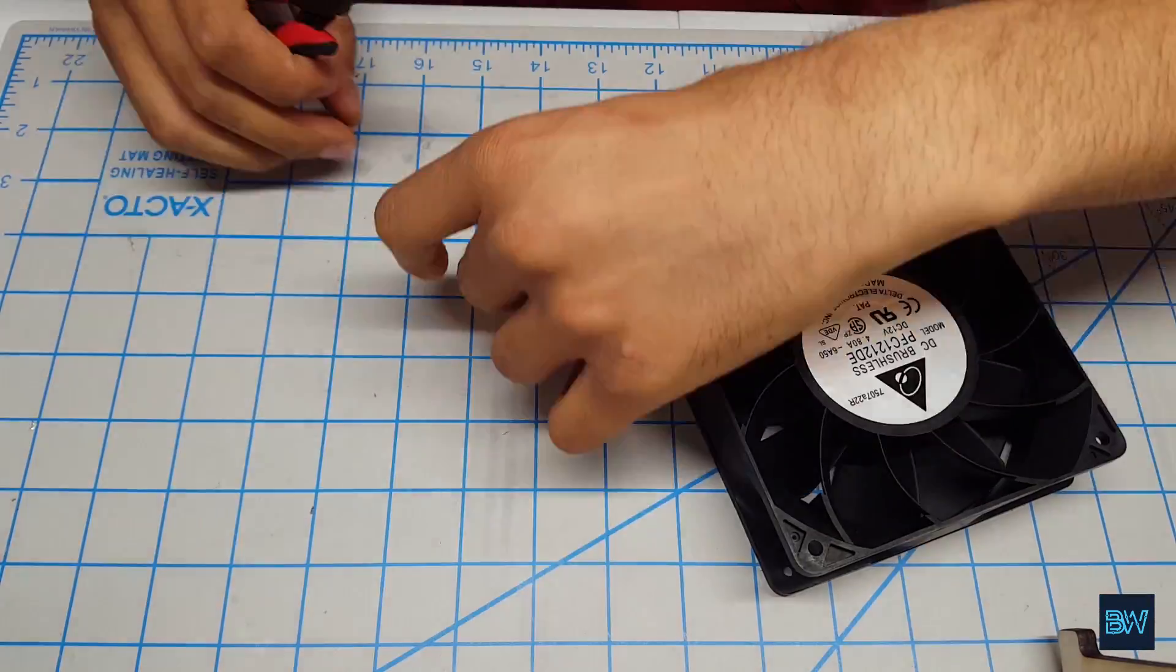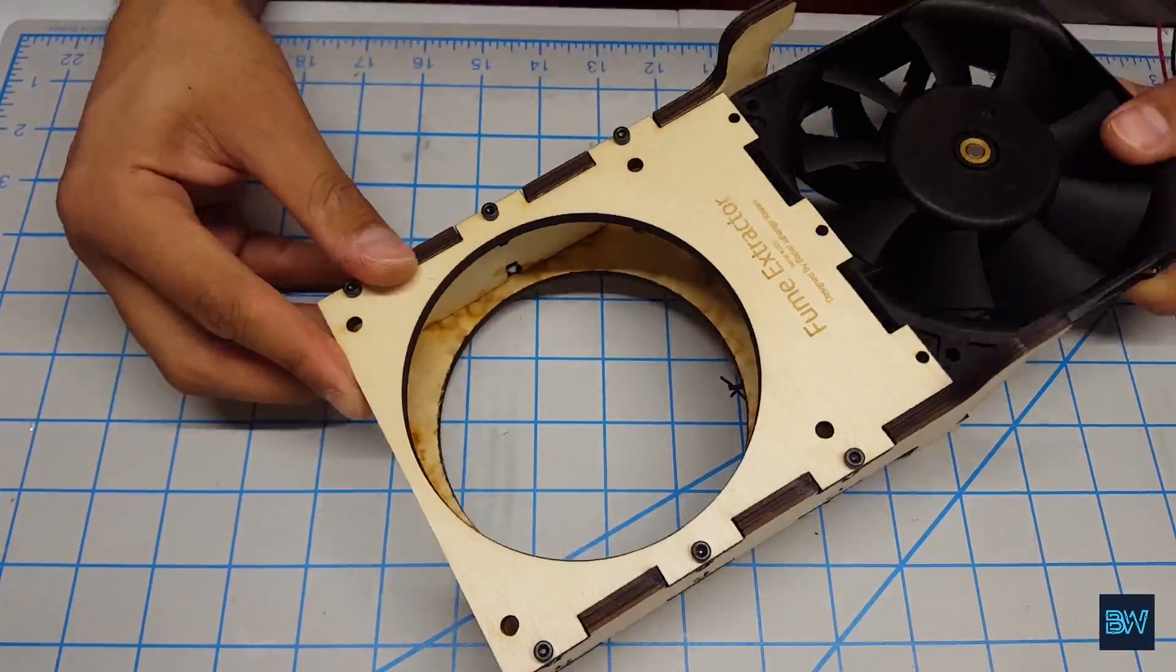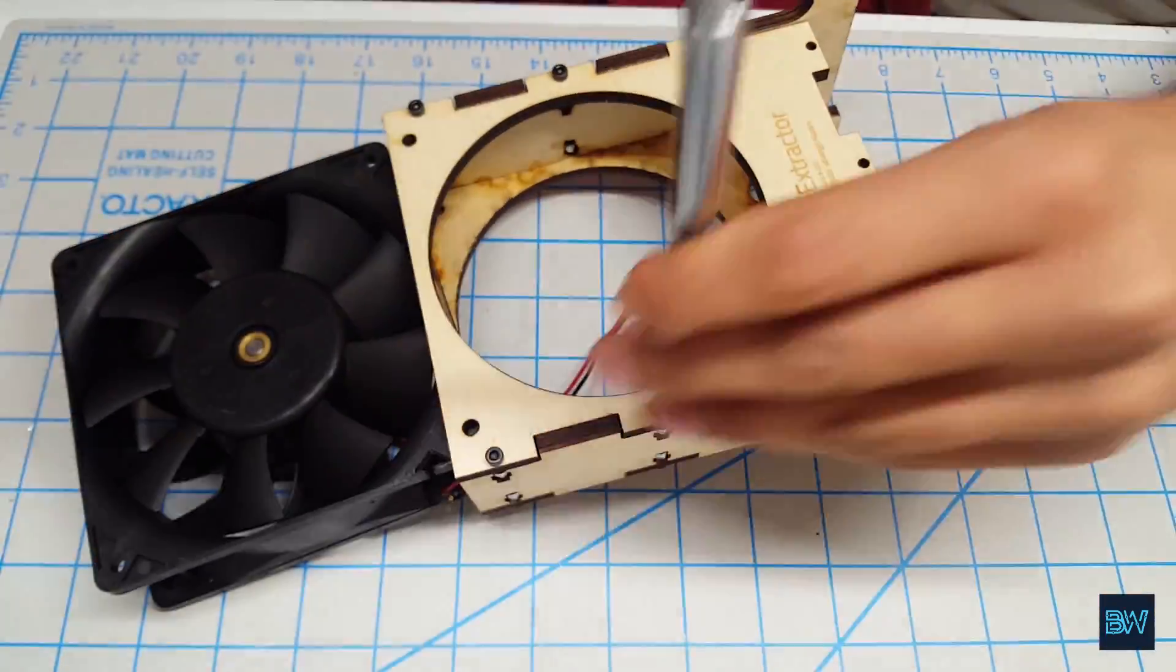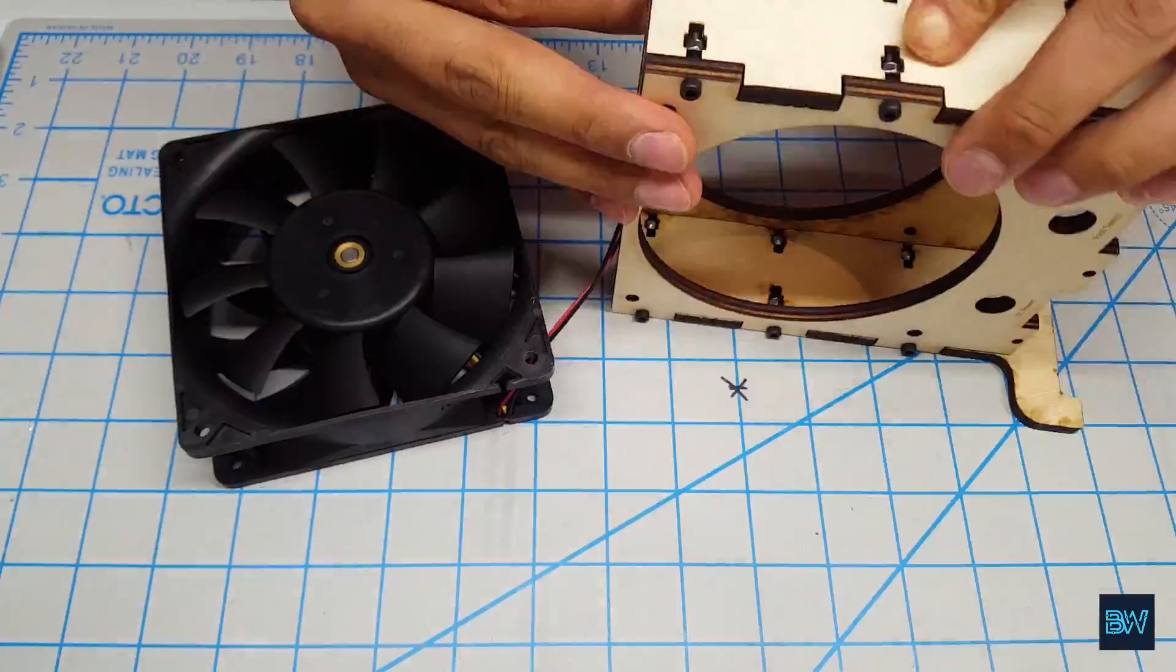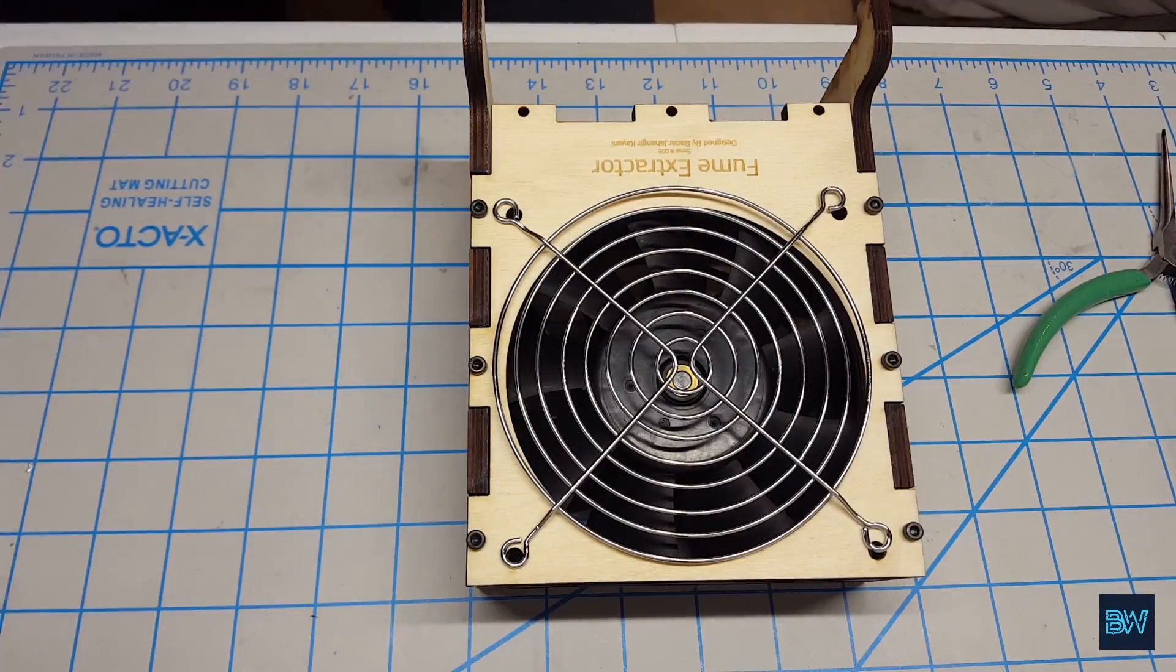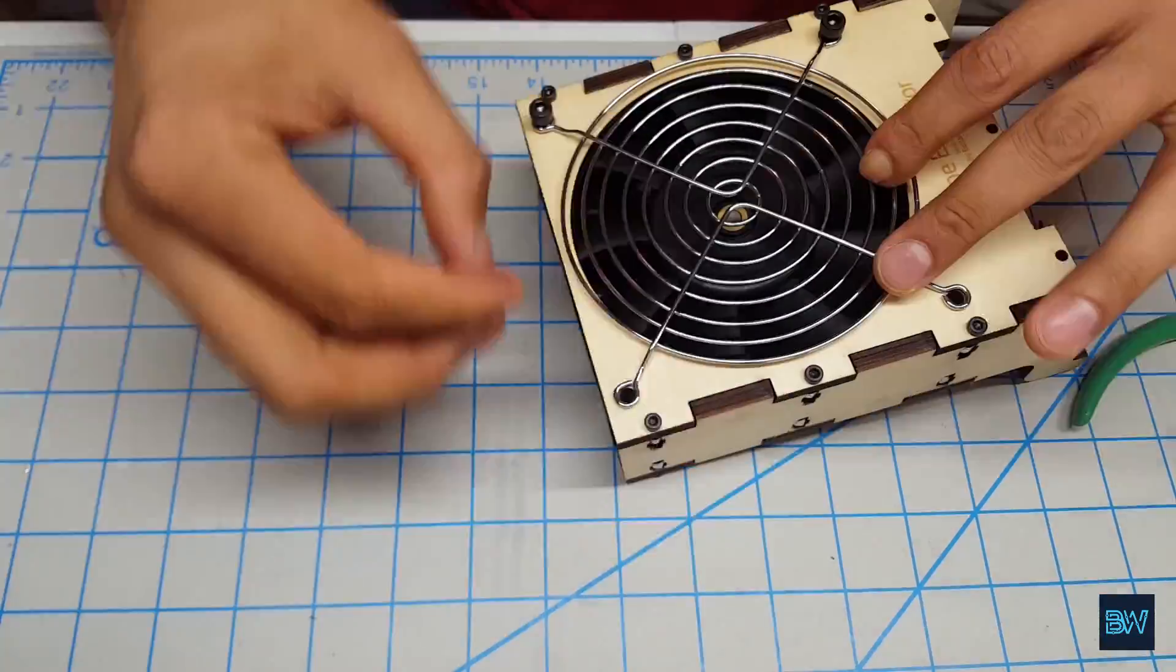Next, insert the 120 millimeter fan in its place making sure of proper orientation. Then screw in the fan grills on both sides using M5 screws.